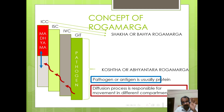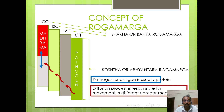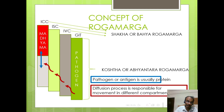If pathogens are present only in the alimentary canal, they are observed in the Abhyantara Roga Marga. If pathogens are present in the intravascular compartment, interstitial compartment, intracellular compartment, outside bones, joints, viscera, and marma, they are considered as the Bahya or Shakha Roga Marga. If pathogens are in the intravascular compartment, interstitial compartment, and intracellular compartment inside bones, joints, and viscera, they are considered as the Madhyama Roga Marga.